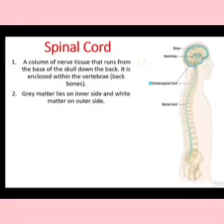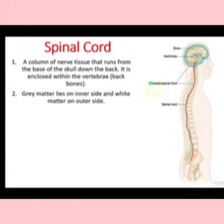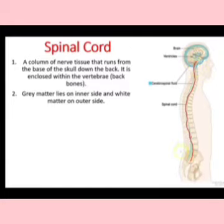The spinal cord is a long unsegmented cord-like structure extending from the medulla oblongata of the brain through the nerve canal of the vertebral column to the lumbar region. It is about 45 centimeters in length and 35 grams in weight. The spinal cord is also covered by three membranes, collectively called meninges, just like the brain, and the space in between these membranes is filled with cerebrospinal fluid.